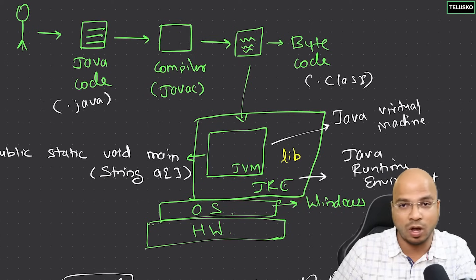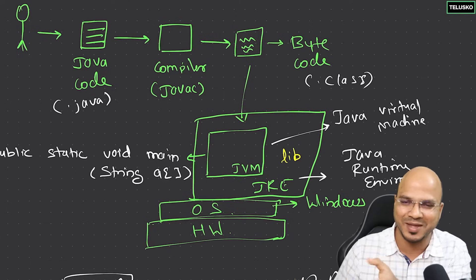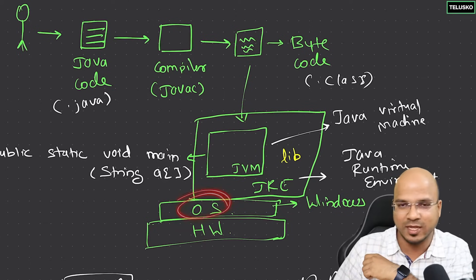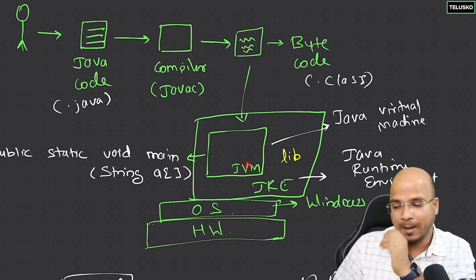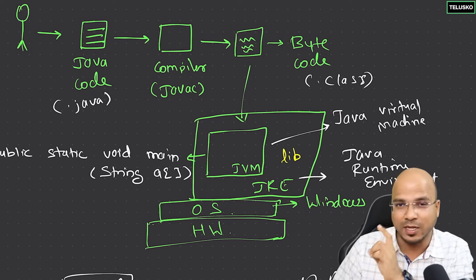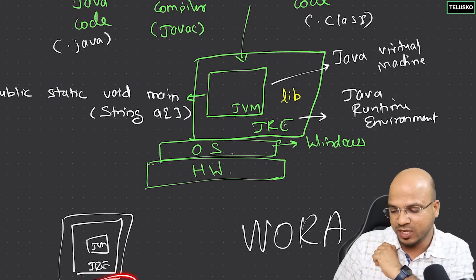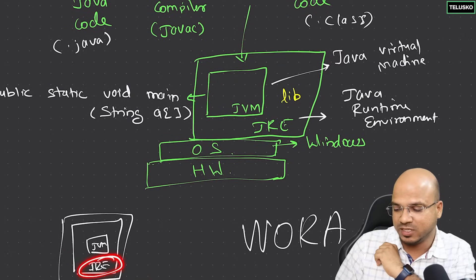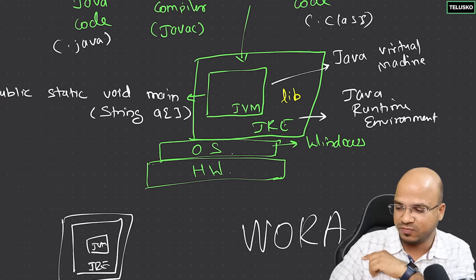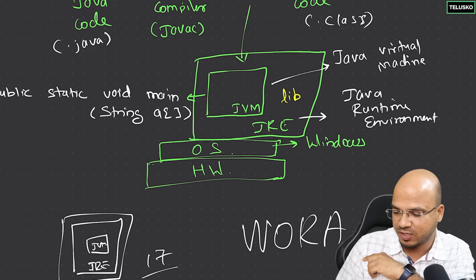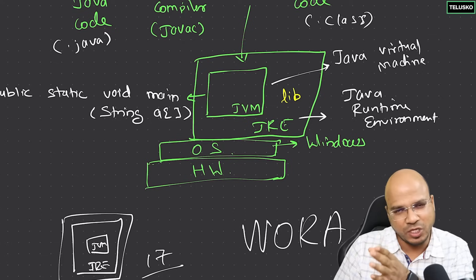You install the JRE on your OS, which runs on hardware. As a developer, you also need the JDK. When you install a new JDK, you get the updated JRE and JVM with it. The version we are using is JDK 17.